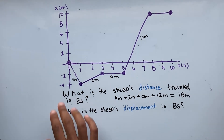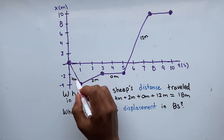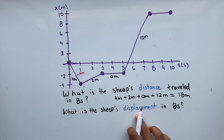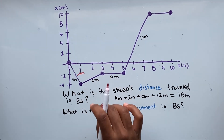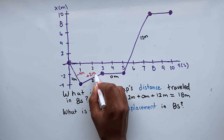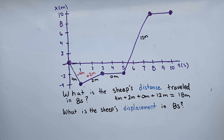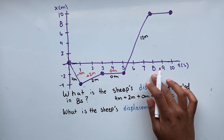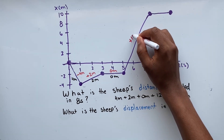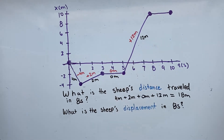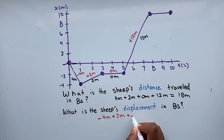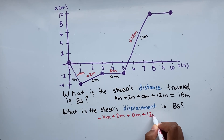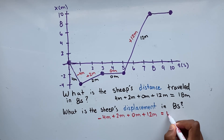Now let's solve for displacement. From 0 to 1 second, our sheep was displaced negative 4 meters — remember, when dealing with displacement we take into account the direction. From 1 to 3 seconds, our sheep was displaced positive 2 meters. From 3 to 5 seconds, our sheep was displaced 0 meters because it remained at negative 2. From 5 to 8 seconds, our sheep was displaced positive 12 meters. Adding: negative 4 plus 2 plus 0 plus 12 gives us a total of 10 meters for our displacement.